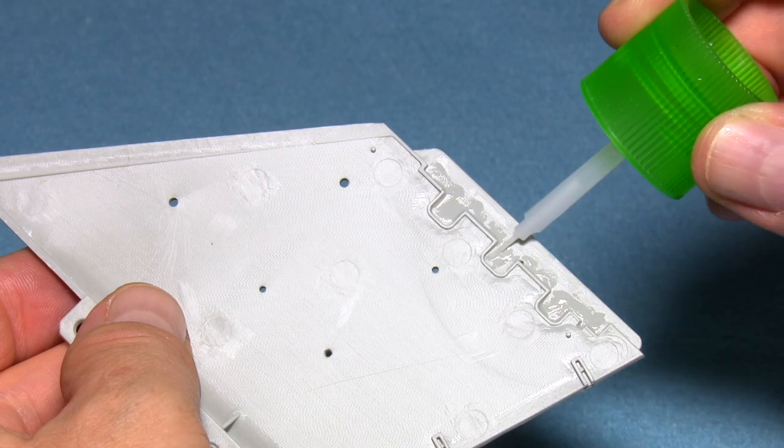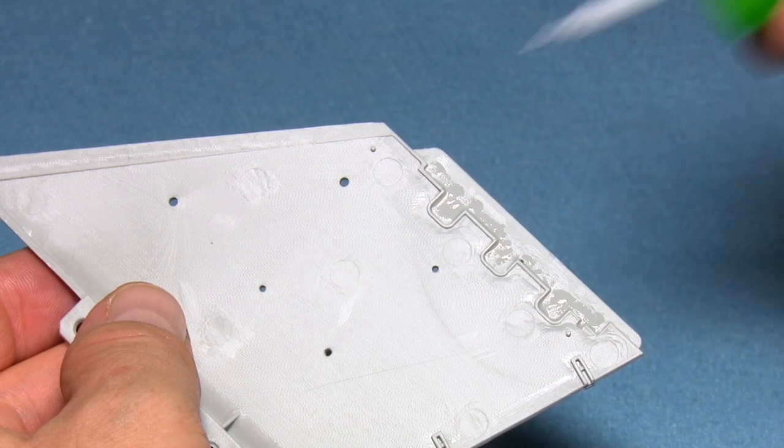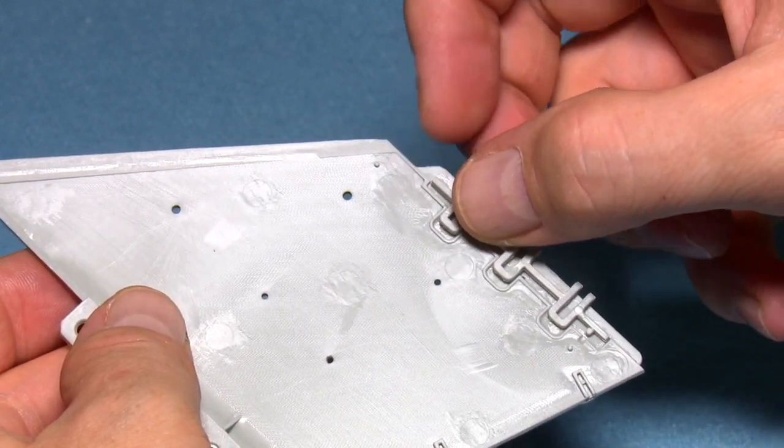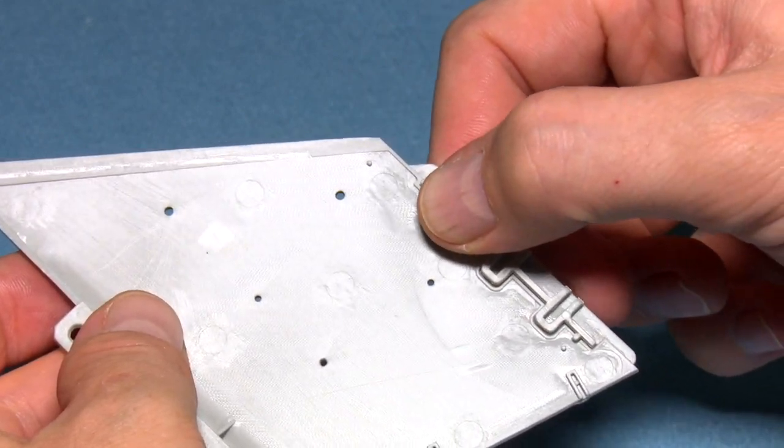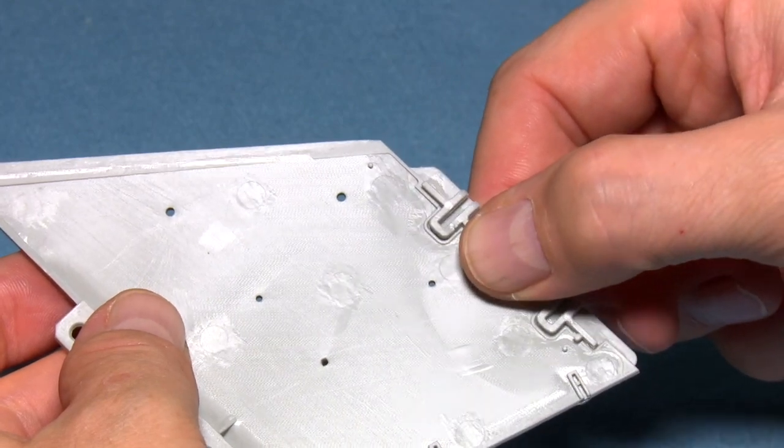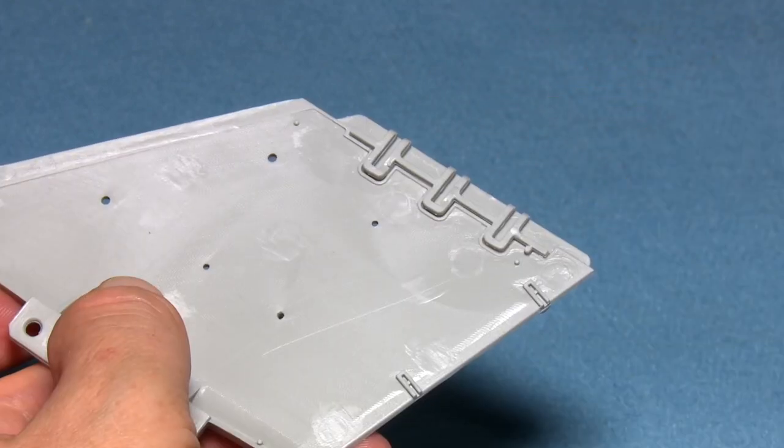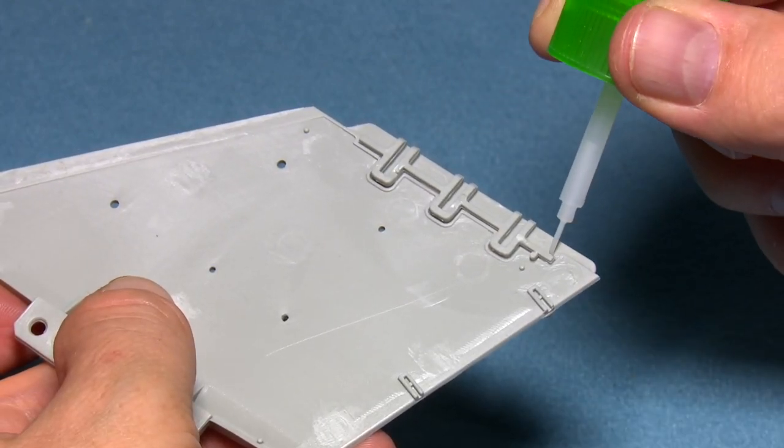If the join is not solid, you run the risk of either the part coming right off later on, once the model is finished, or potentially leaving gaps and cracks that may occur. In any event, it's better to make sure that there's a solid join.